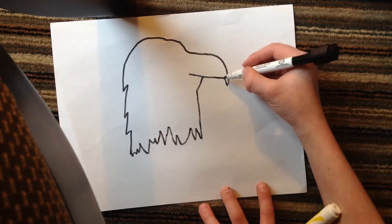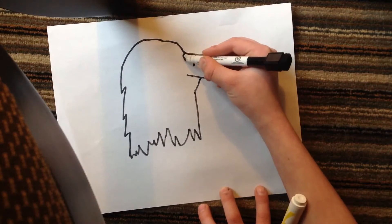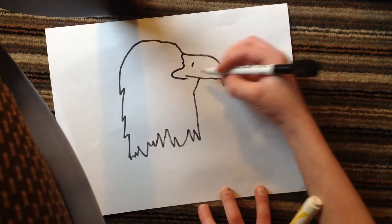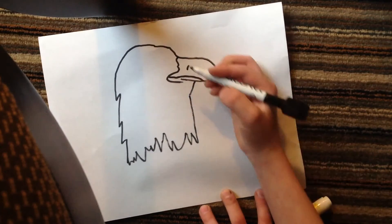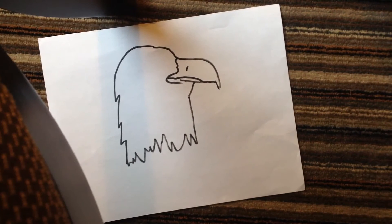And then you draw the nostril. And then you come out of the beak, then you do the mouth. See how it's coming together like an eagle there?